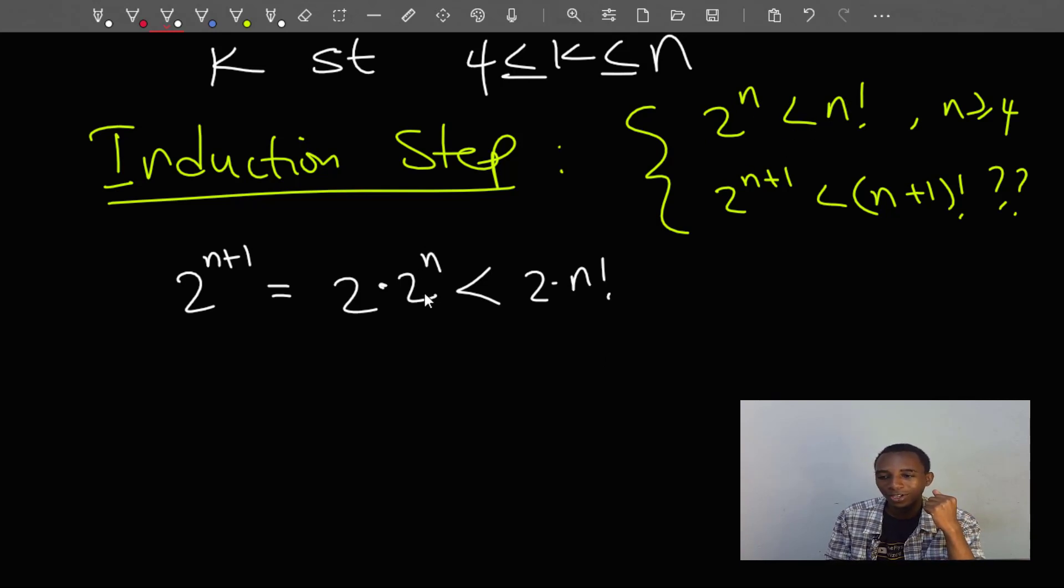2 to the power n is less than n factorial, which is this right here. And this 2 doesn't affect this inequality. So 2 times 2 to the power n is less than 2 times n factorial. Now next, we know that values of n for this proposition to be true are always n greater than or equal to 4.